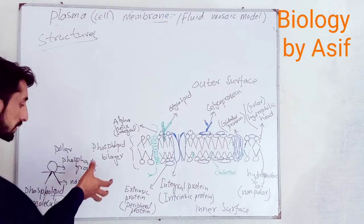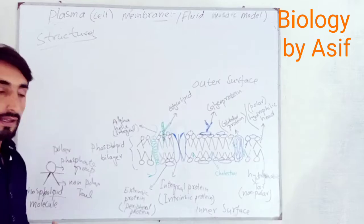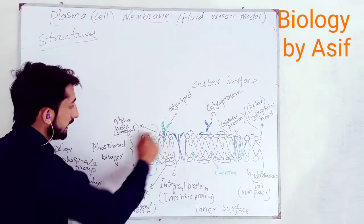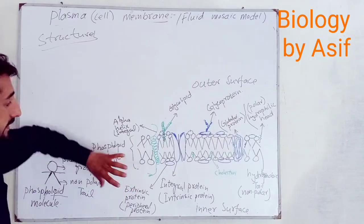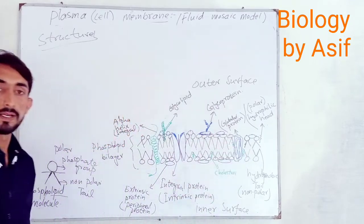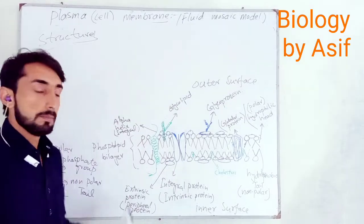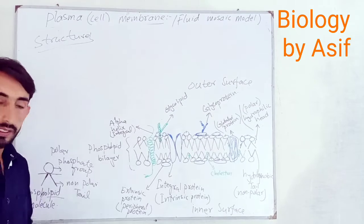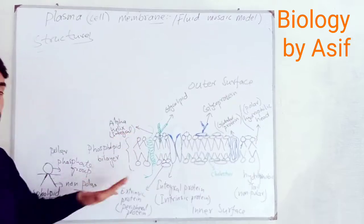In addition to phospholipid bilayers, there is another type of molecule: proteins. There are mainly two types of protein in the formation of the cell membrane. One is the integral protein, also known as intrinsic protein or permease. Intrinsic means it is embedded between the lipid molecules.